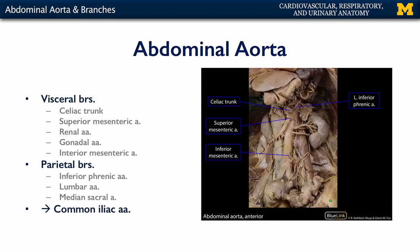Here we can see a cadaveric abdominal aorta. We can see its margins and some of those major anterior branches: the celiac trunk, the superior mesenteric, and the inferior mesenteric. We can also see the inferior phrenic arteries, a left renal artery, an accessory renal artery, and a gonadal artery descending. The abdominal aorta rests left lateral to the inferior vena cava — the aorta is on the left of the individual, and the inferior vena cava is on the right.